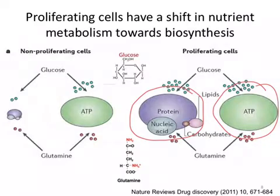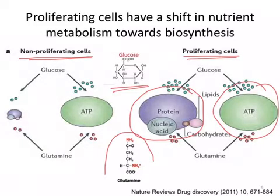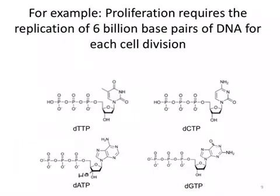This image nicely summarizes the differences in metabolism between your typical non-proliferating cell in the body versus proliferating cells, including cancer cells. Note that the two big inputs, at least that we currently understand, are glucose and the amino acid glutamine. For example, think about all the nucleotides that must be synthesized in order for DNA to be replicated — about 12 billion nucleotides that have to be made in every cell division.